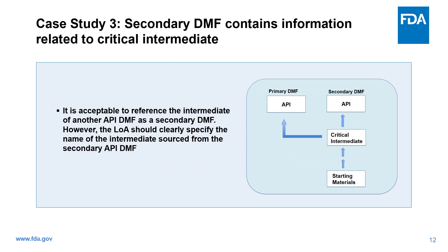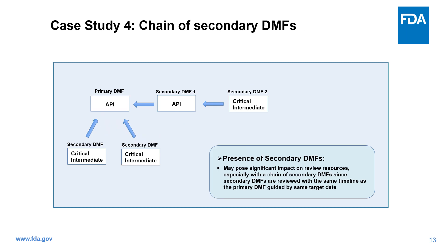We often receive the question from industry whether it is acceptable to reference an intermediate of another API DMF as a secondary DMF. Yes, it is acceptable. However, the Letter of Authorization should clearly specify the name of the intermediate sourced from the secondary API DMF.